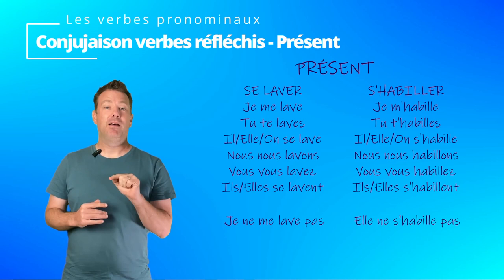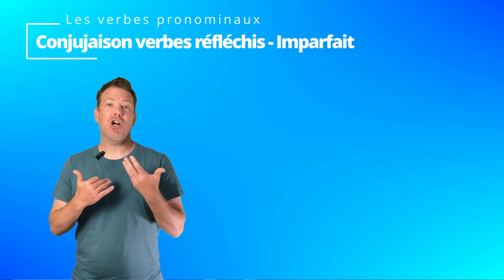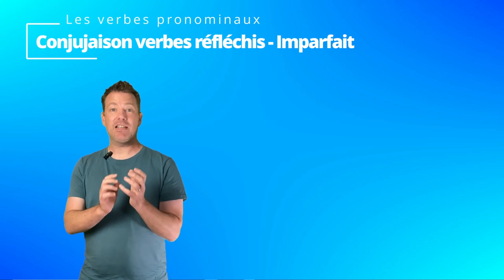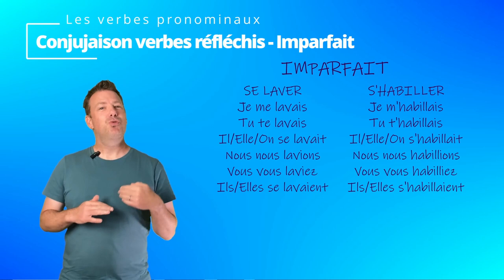Their conjugation pattern in the imparfait follows exactly the same structure. You will just need to conjugate the verb in the imperfect, but the way you deal with the reflexive pronoun is exactly the same. Je me lavais, tu te lavais, etc. Je m'habillais, tu t'habillais, etc.